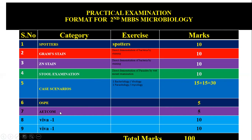OSPE (Objective Structured Practical Examination) carries 5 marks, and ADCOM (Attitude, Ethics and Communication) carries 5 marks. For the viva, two internal examiners each give 5 marks totaling 10, and two external examiners each give 5 marks totaling 10. The grand total is 100 marks.